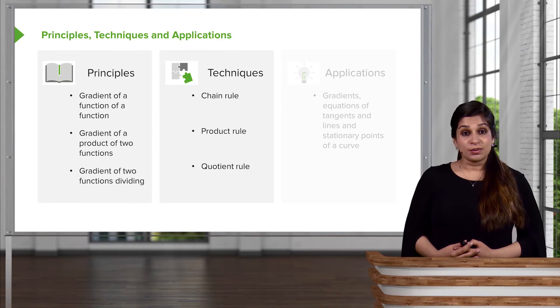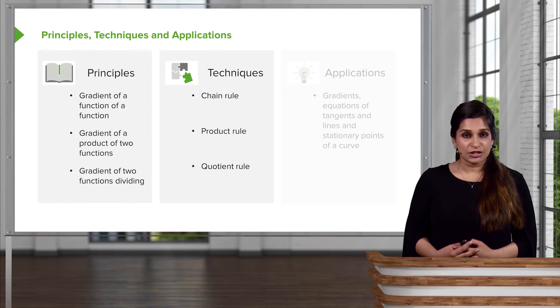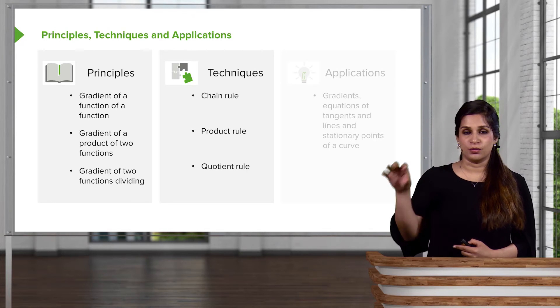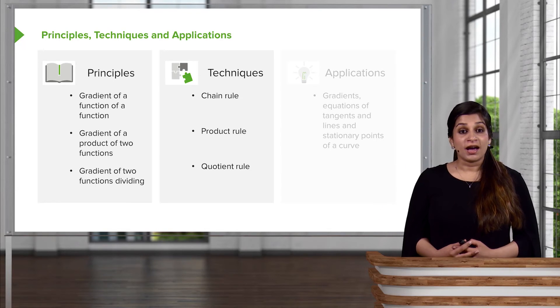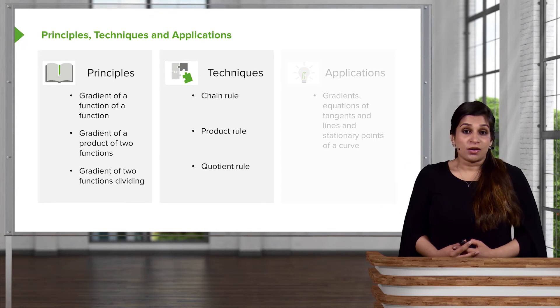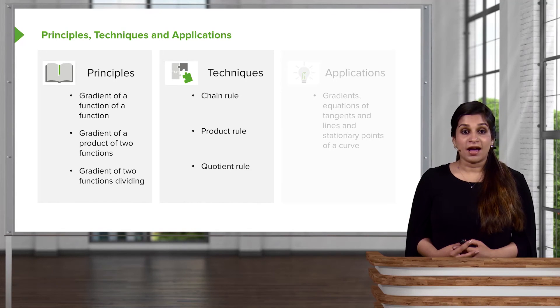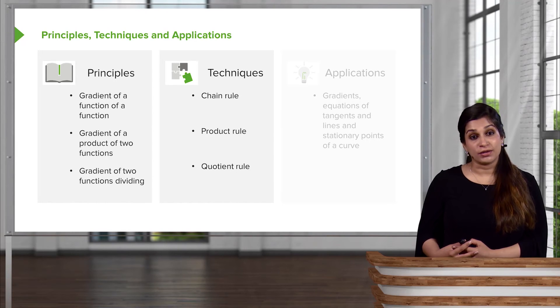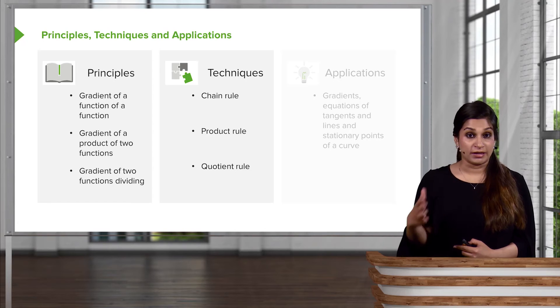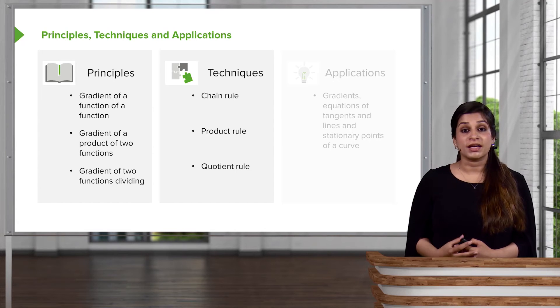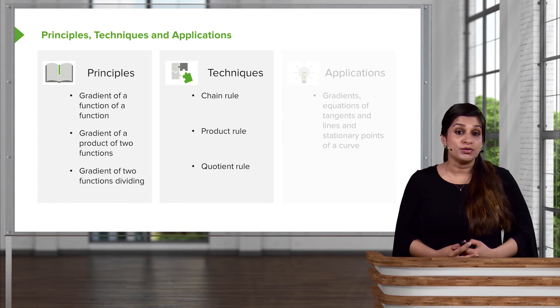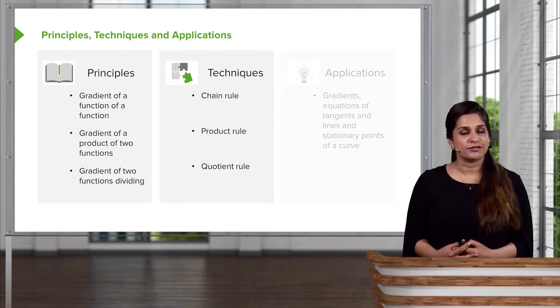The techniques for each one: for a function of a function is the chain rule, because it's a function within a function. When you have the product of two functions, we just call it the product rule. And when you have two functions dividing, we call it the quotient rule. We'll learn how to apply them and we'll also look at the derivatives and the proofs for them, so you're fully convinced that it's the right thing to do.